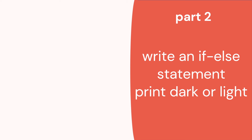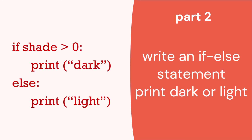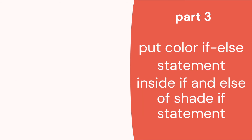Part two is an if-else statement for dark or light — pretty much the same code, except we have: if shade is greater than zero, print dark, else print light. Now for part three, we want to put the color if-else statement inside both the if and else parts of the shade if statement. So the shade if gives us a true or false, and we put the color logic in both parts.